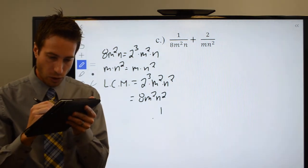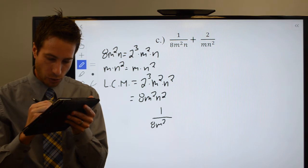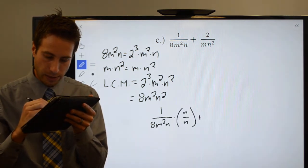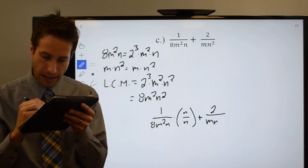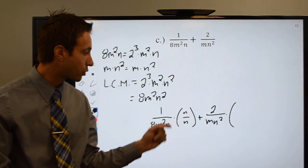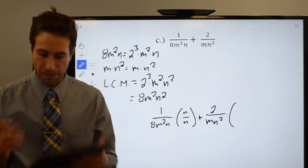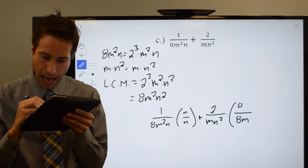1 over 8M squared N times N over N, plus 2 over MN squared. Well, I need this to become 8M squared N squared. So I already have an MN squared, I just need an 8M. So multiply top and bottom by 8M.